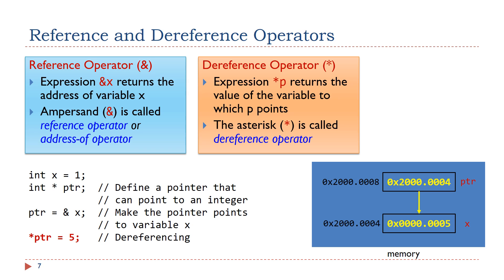The expression asterisk ptr represents the value pointed by ptr. This C statement stores 5 to the memory location pointed by ptr. As a result, we indirectly set the value of variable x to 5.